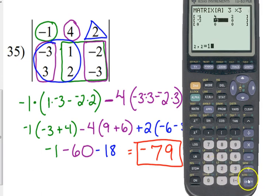Negative 3, 1, negative 2, 3, 2, negative 3. Go to my home screen.